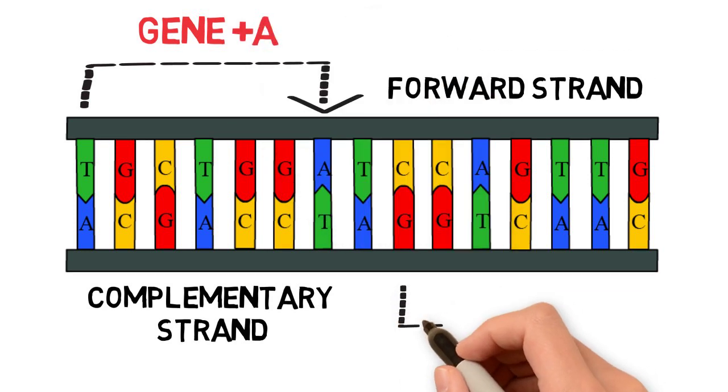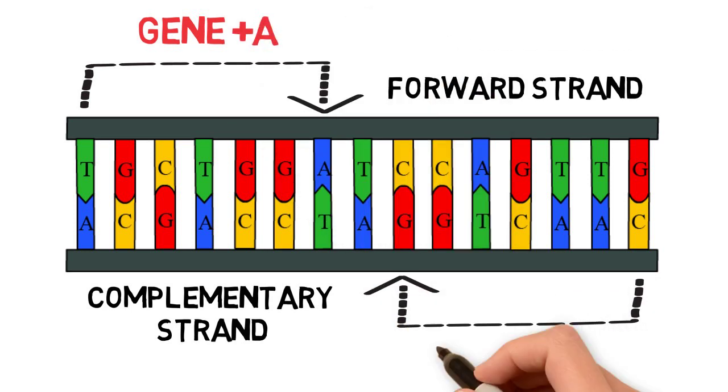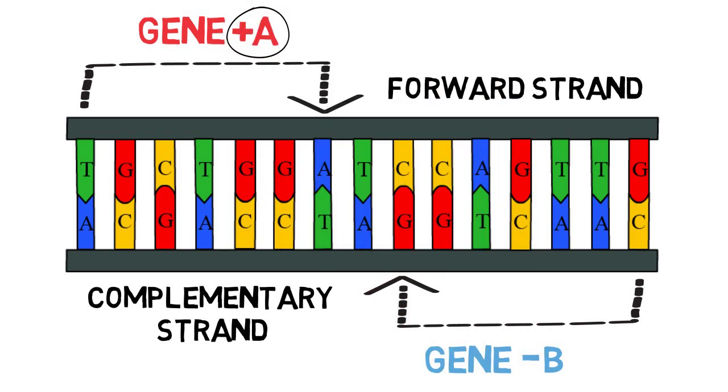Plus and minus signs are also commonly used to represent on which strand the genes are. The plus sign represents the strand that is shown, that is, the forward strand, whereas the minus sign represents the complementary strand, or the one that is not shown, and that is in the opposite orientation.